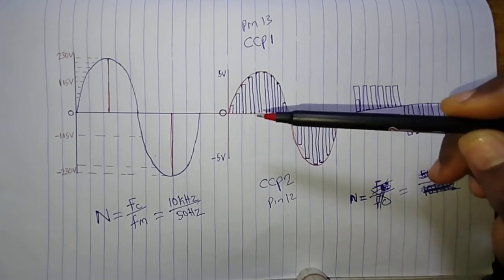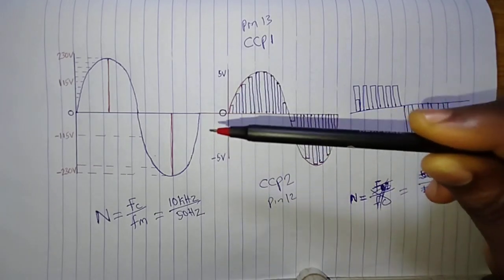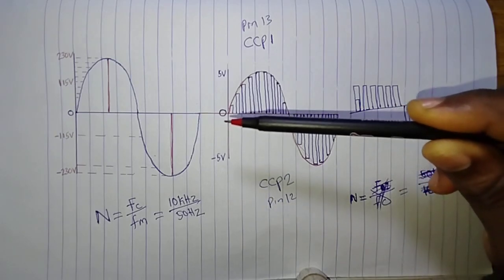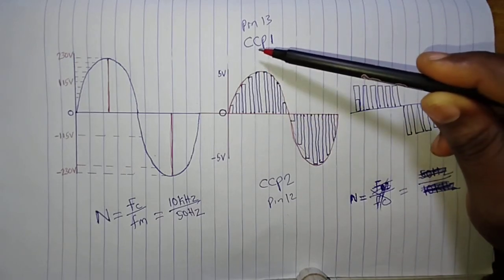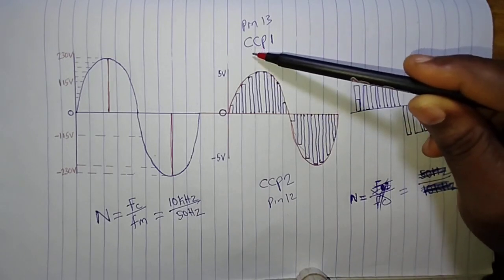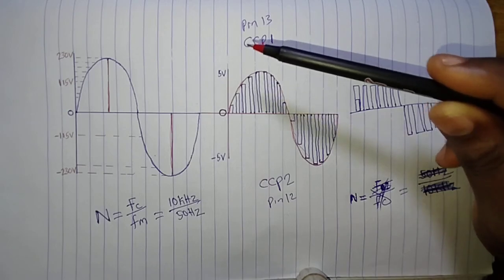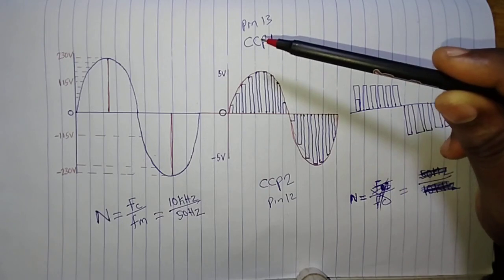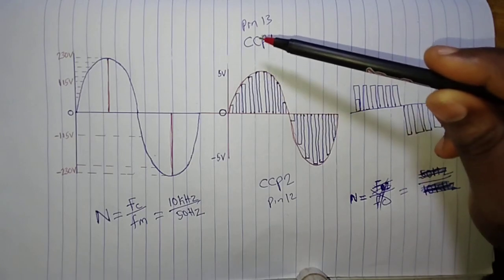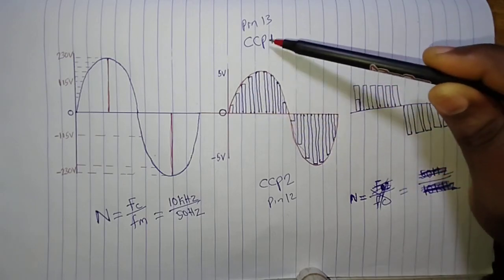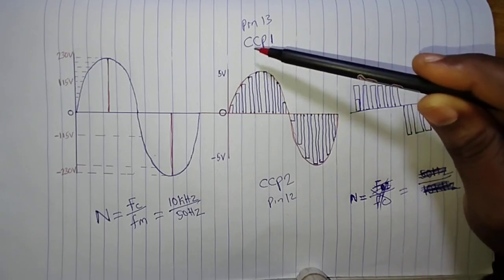In order to generate SPWM, we need to understand what the CCP module does in a microcontroller. Before designing a pure sine wave inverter, you have to check whether your microcontroller has this module called CCP — Capture Compare PWM. It is a module that has three different modes. For our purposes we are working with PWM mode, which we configure by assigning values to the registers of the microcontroller.